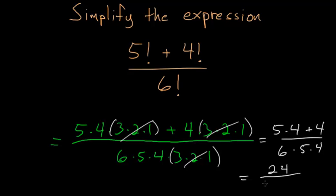So we have 24 times 5 in the bottom, and 24 over 24, these just cancel out. So what we're left with is just one-fifth. So this entire expression is simply 1 divided by 5.